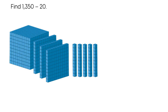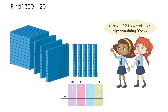Find one thousand three hundred fifty minus twenty. One thousand three hundred fifty minus twenty equals one thousand three hundred thirty.